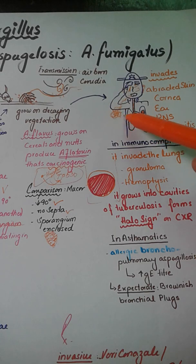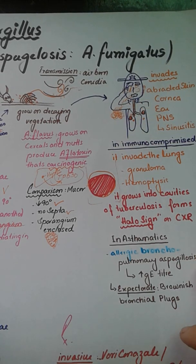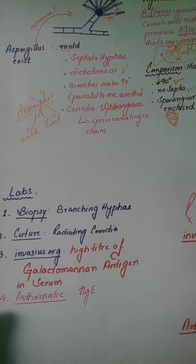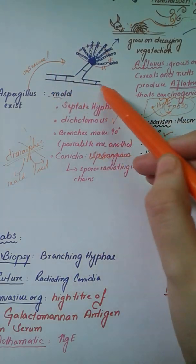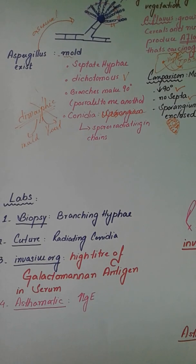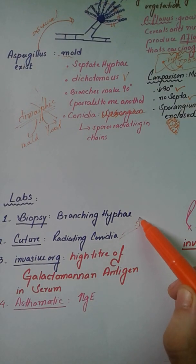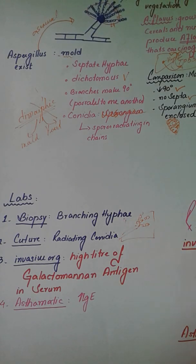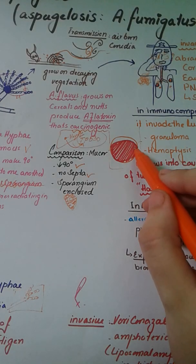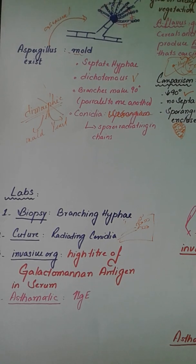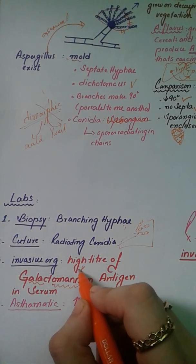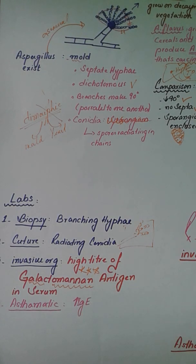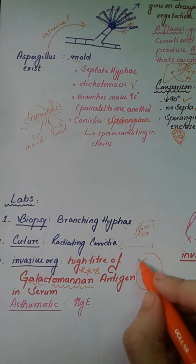Diagnosis can be made by taking a biopsy, where we see branching hyphae — since the organism exists as mold inside and outside the body — and radiating conidia. If the organism is invasive, meaning it has penetrated through the cavity into the lung parenchyma, we will see a high titer of the galactomannan antigen, which is a very important marker for invasive aspergillosis.